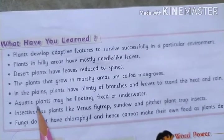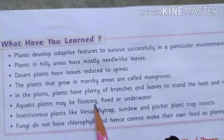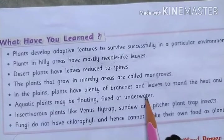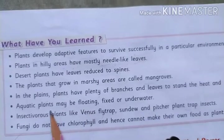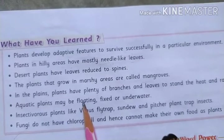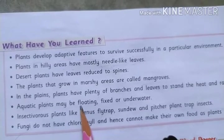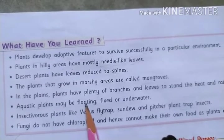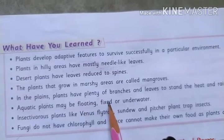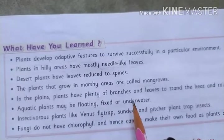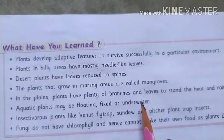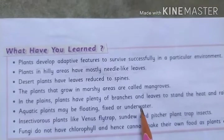Aquatic plants may be floating, fixed, or underwater. Floating plants include hyacinth and duckweed. Fixed plants are lotus and water lily. Underwater plants include hydrilla and tape grass.